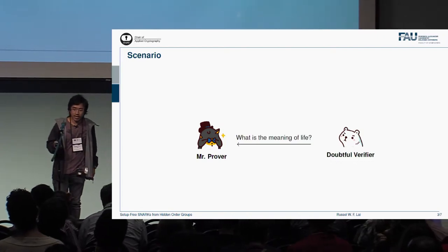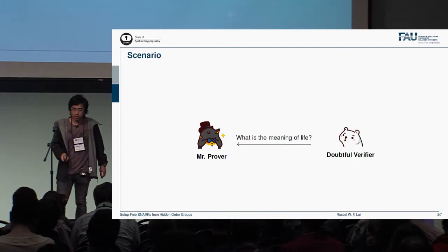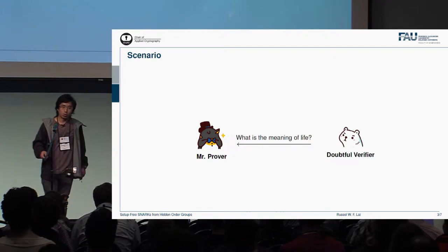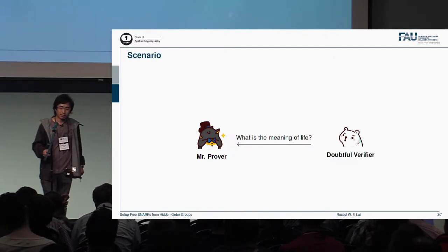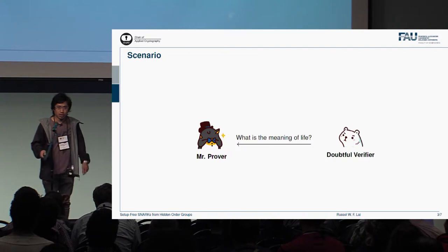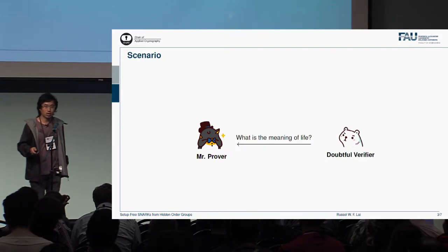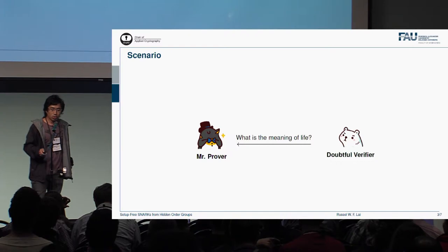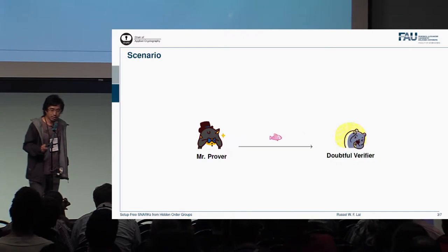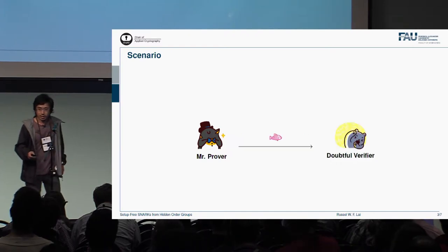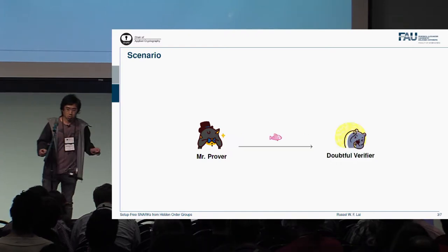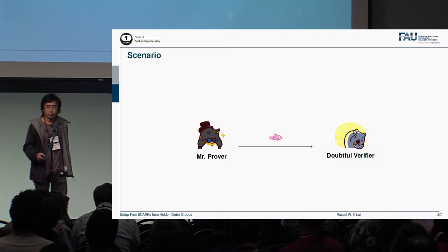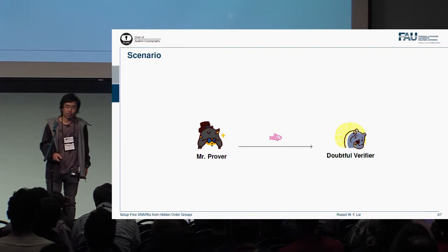Now the doubtful verifier has a difficult question — it says, 'What's the meaning of life?' Mr. Poover is smart and of course he knows the answer, but he's also a cool guy so he doesn't want to say much. So he prepared this for the verifier — it is so precise, so exquisite, that the doubtful verifier can't even comprehend the wisdom.